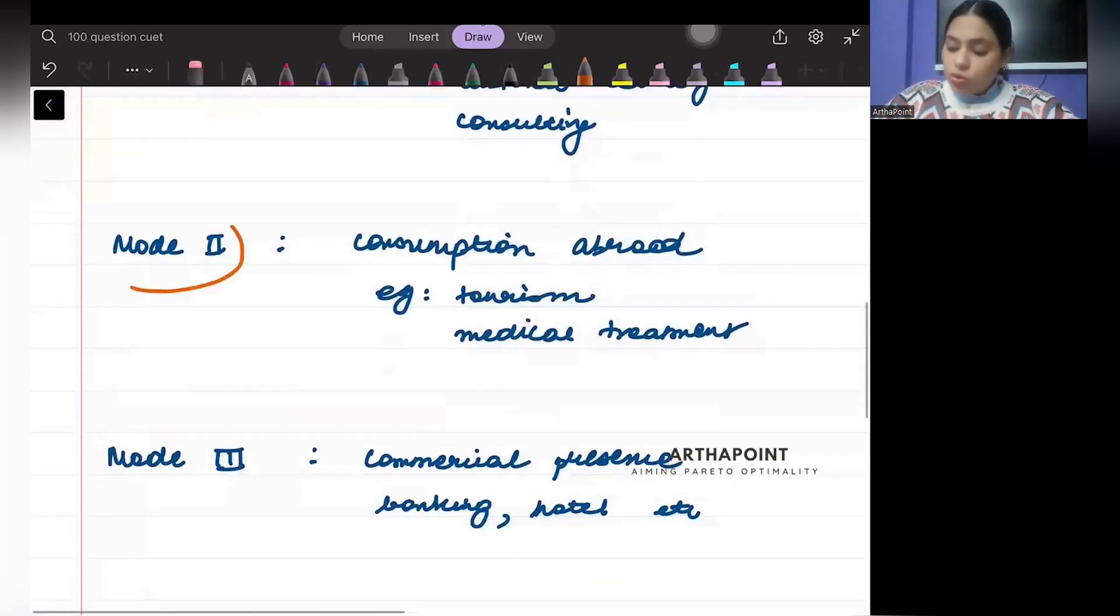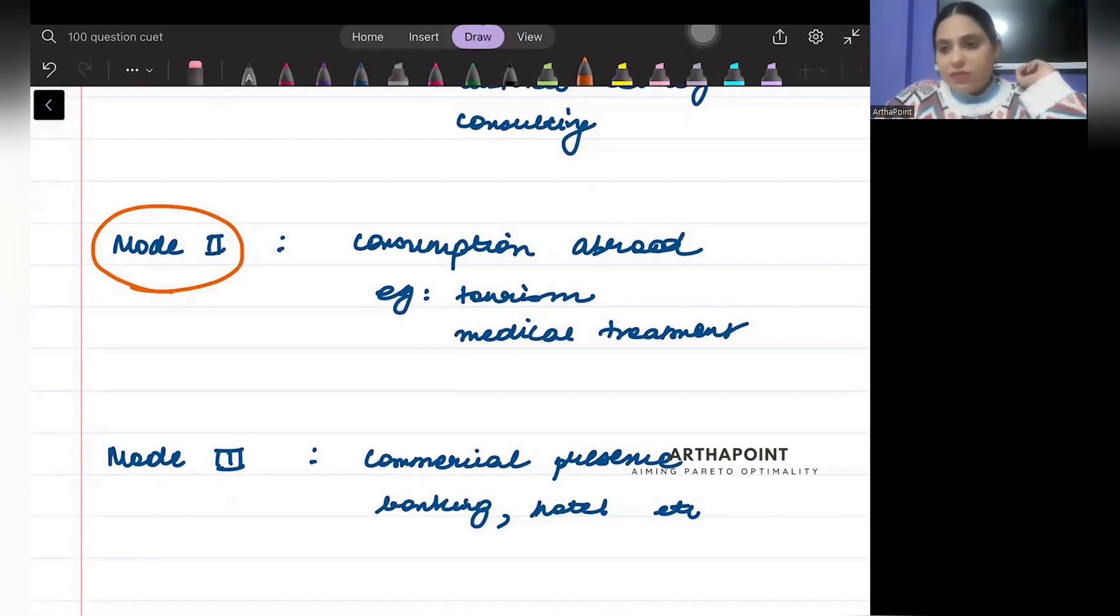Mode 2 is related to consumption abroad. For example, if I travel to Dubai and I consume in Dubai, that is a part of their tourism and they have a service. I am actually consuming abroad in that case. Or for example, if I go for some medical treatment outside India, then that is also a part of consumption abroad.